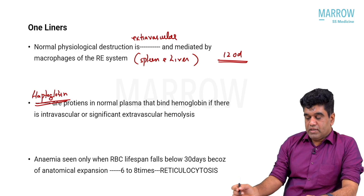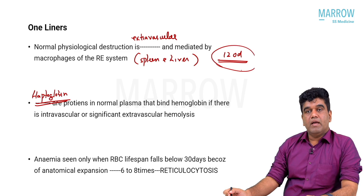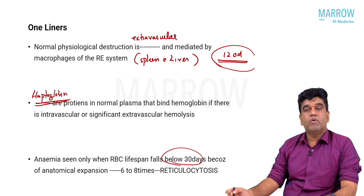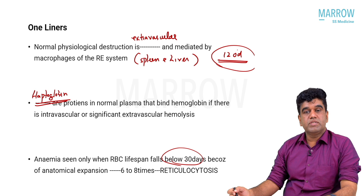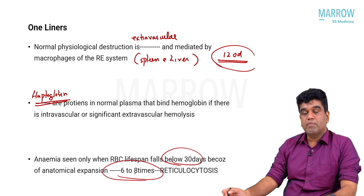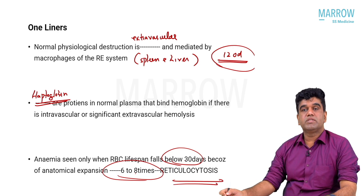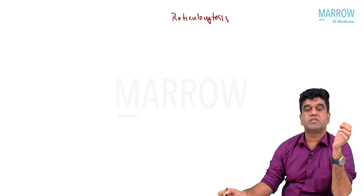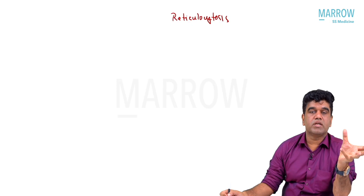The main point to understand is that normal lifespan is 120 days. Because the marrow has the tendency to expand, only when the lifespan falls below 30 days do you actually see anemia. From 30 to 120 days you are not going to see anemia, because of the anatomical expansion of the marrow — almost 6 to 8 times — which is the reason for so much reticulocytosis. So if RBCs are getting destroyed pathologically, it does not initially manifest as anemia.